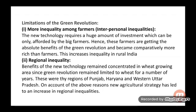Limitations of the Green Revolution: First, more inequality among farmers — interpersonal inequalities. Rich farmers were able to take benefit because they had money to purchase machinery, fertilizers, high yielding seeds, and pesticides. Poor farmers did not benefit much. The new technology required a huge amount of investment which only big farmers could afford, making them comparatively more rich, thereby increasing inequality in rural India.